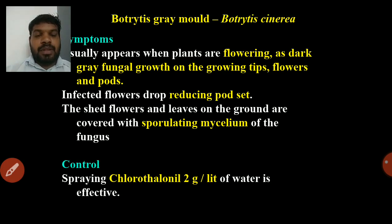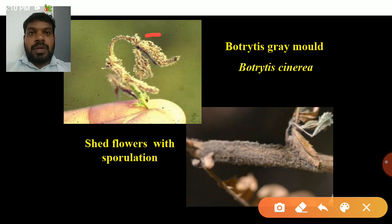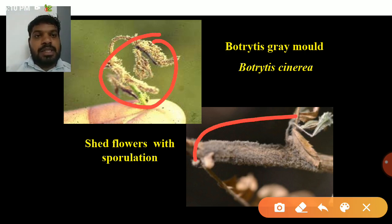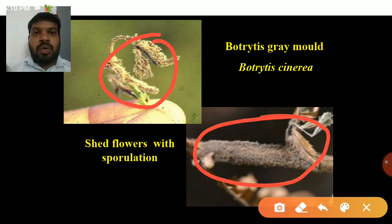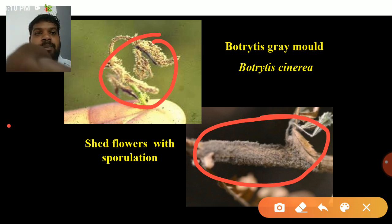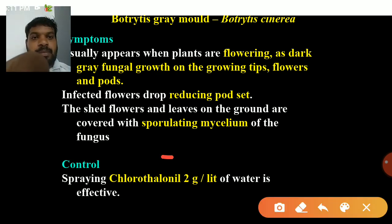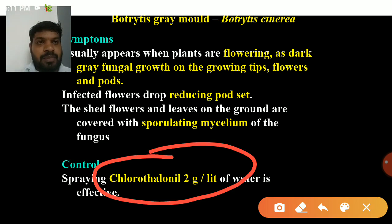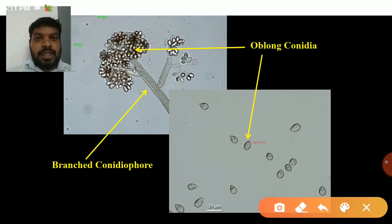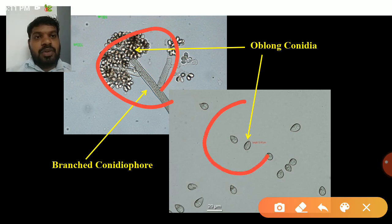Next is Botrytis gray mold caused by Botrytis cinerea. It mainly infects the inflorescence or flowers. The infected parts produce gray color mold or powdery growth. Control: apply chlorothalonil per liter of water. The pathogen produces branched conidiophores with globose or oblong conidia, resembling a tree-like conidiophore structure.